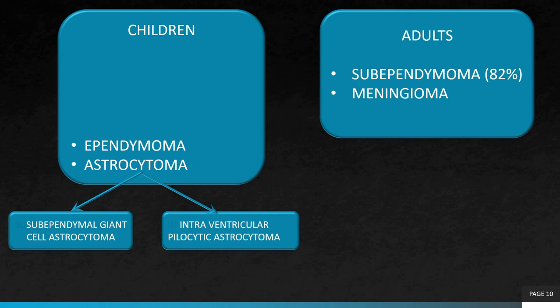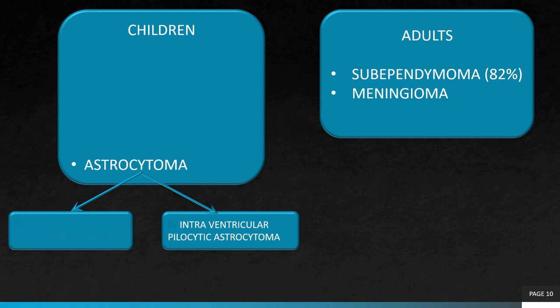Ependymomas have cystic components with small chunky calcification and heterogeneous enhancement, so they also appear less likely. Sub-ependymal giant cell astrocytoma appears less likely as they are periventricular in location and are often associated with tuberous sclerosis. It cannot be a meningioma as the patient is a child and the lesion does not enhance. So we are left with two possibilities: first, intraventricular pilocytic astrocytoma, and second, sub-ependymoma.